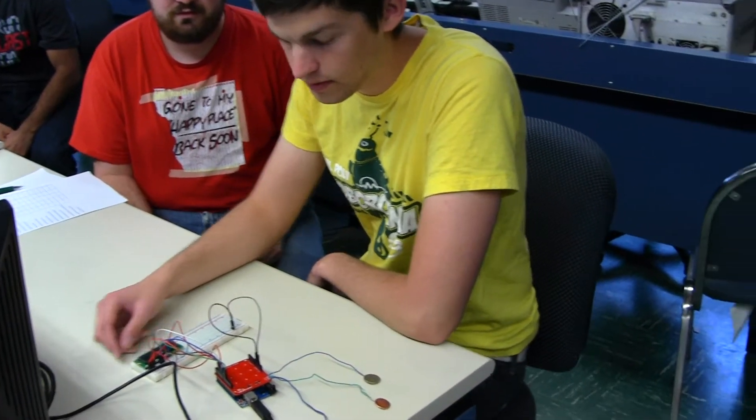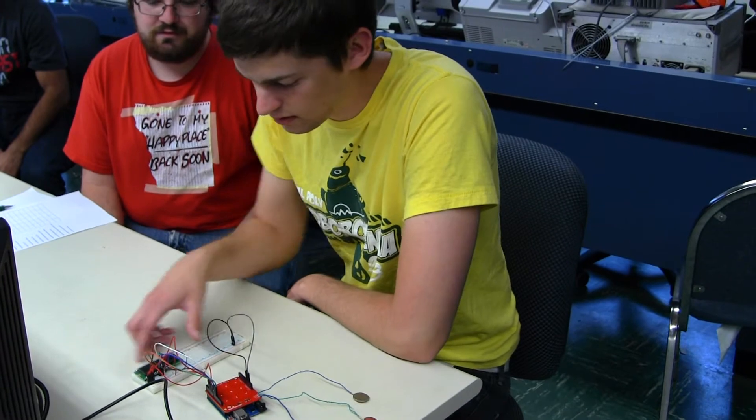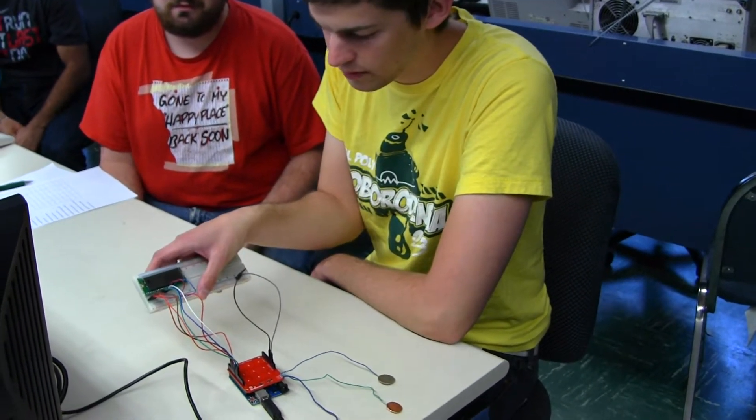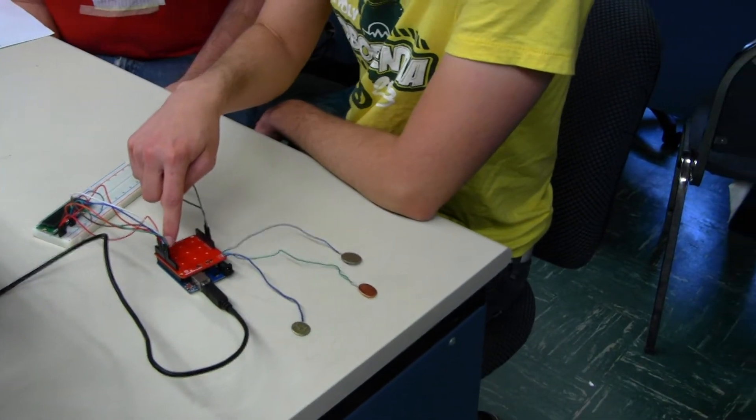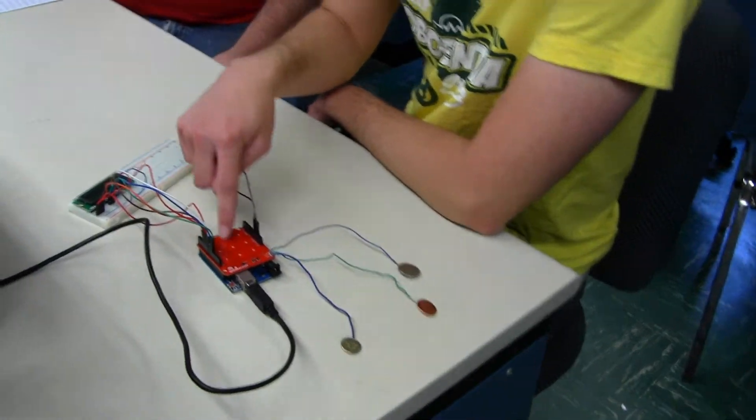This is our touch shield right here, and it interfaces via I2C. We use the LCD screen to display the numbers and the different functions it can do. So what you can do is you can enter your number with the touchpad,